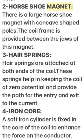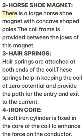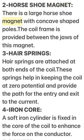2. Horseshoe magnet: There is a large horseshoe magnet with concave-shaped poles. The coil frame is provided between the jaws of this magnet. 3. Hairsprings: Hairsprings are attached at both ends of the coil.